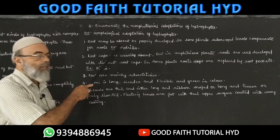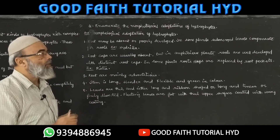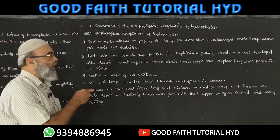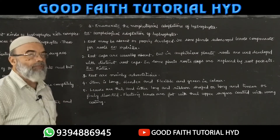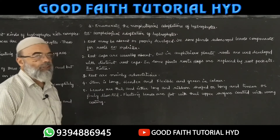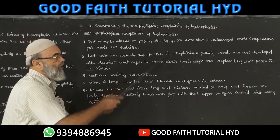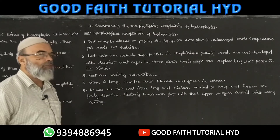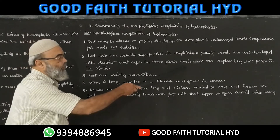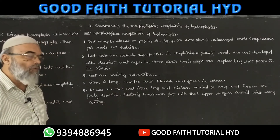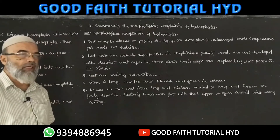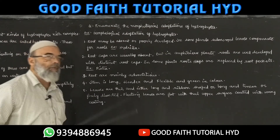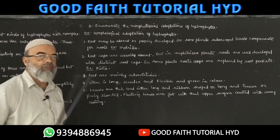First morphological adaptation — roots: roots may be absent or poorly developed. In some plants, leaves compensate for roots. Examples are Hydrilla and Pistia, where roots are absent. Root caps are usually absent, but in amphibious plants, roots are well developed with a distinct root cap. In some plants, root caps are replaced by root pockets, as in Pistia, which helps it float.